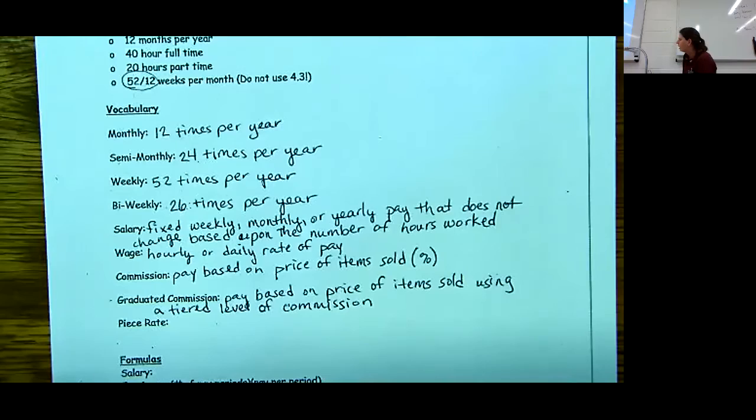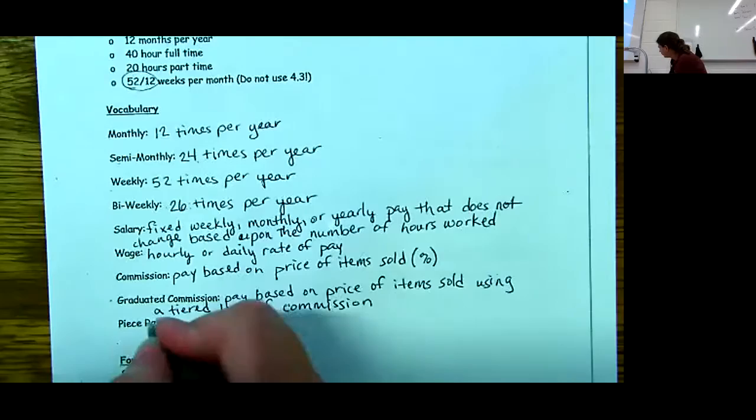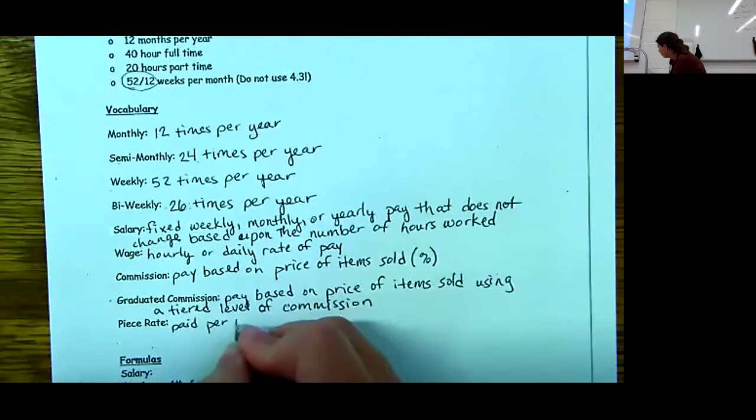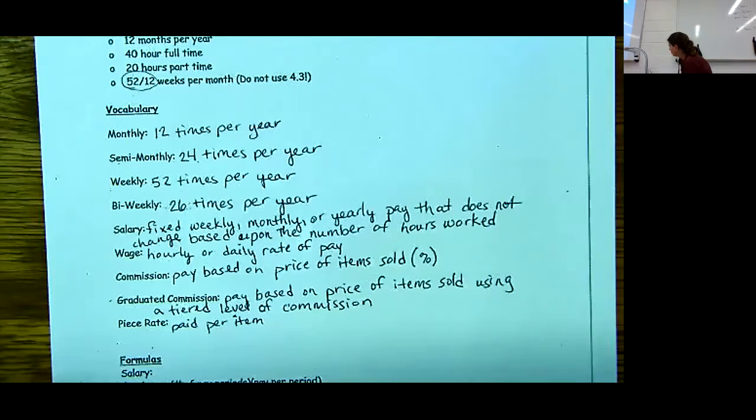Graduated commission is still that pay based on the price of the item sold, which is a percentage, except for this time there could be lots of different levels to this. Using a hierarchy tiered level of commission. A lot of if you sell things kind of door to door, companies like Tupperware, some jewelry lines, a lot of cosmetic things, they'll do a tiered system. Like the more you sell, a higher percentage you get once you get over certain levels. And then the last way is a piece rate.